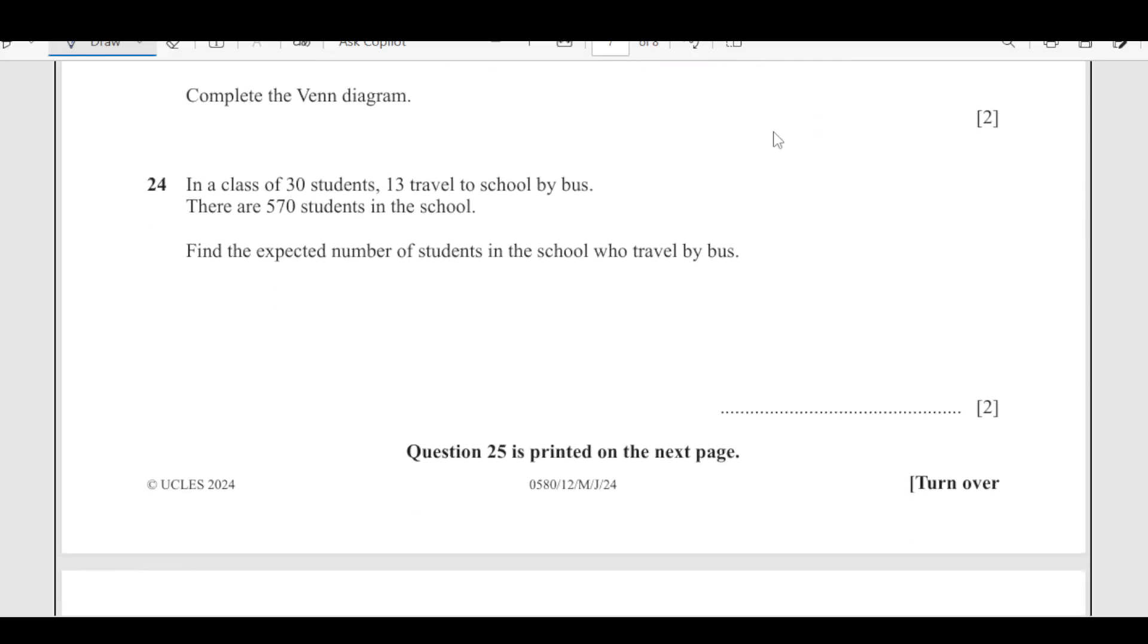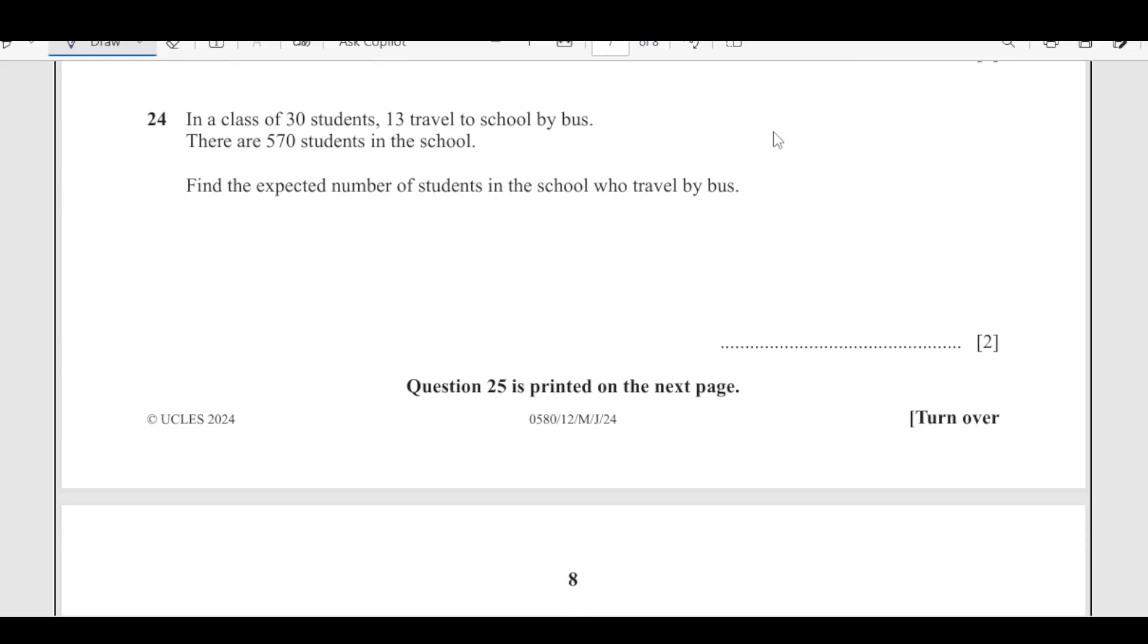Number 24: In a class of 30 students, 13 travel to school by bus. There are 570 students in the school. Find the expected number of students in the school who travel by bus. There are 13 students who travel by bus out of 30, so we need to find how many out of 570. We multiply: (13/30) × 570, which simplifies to 247.